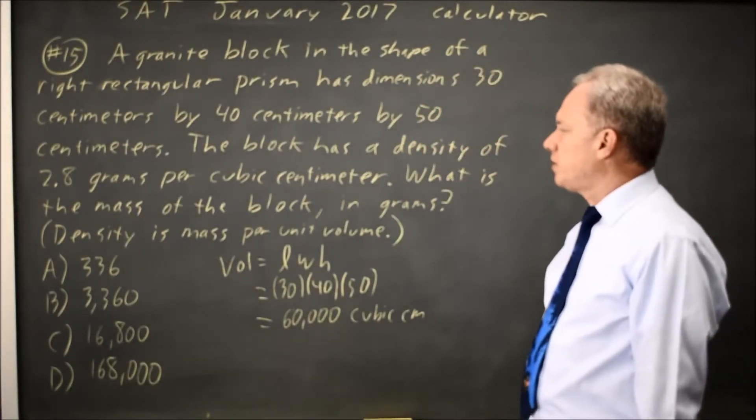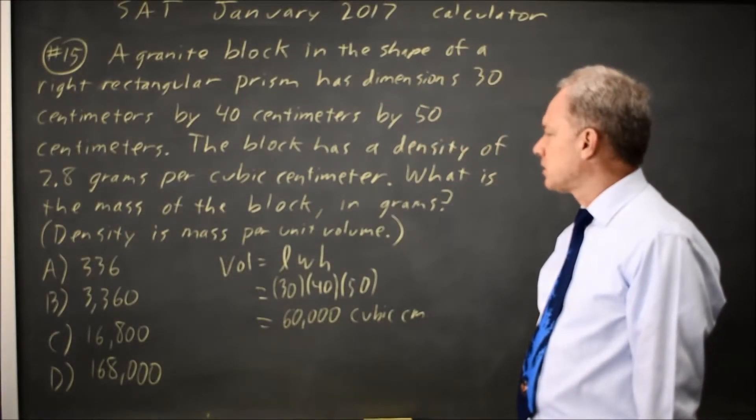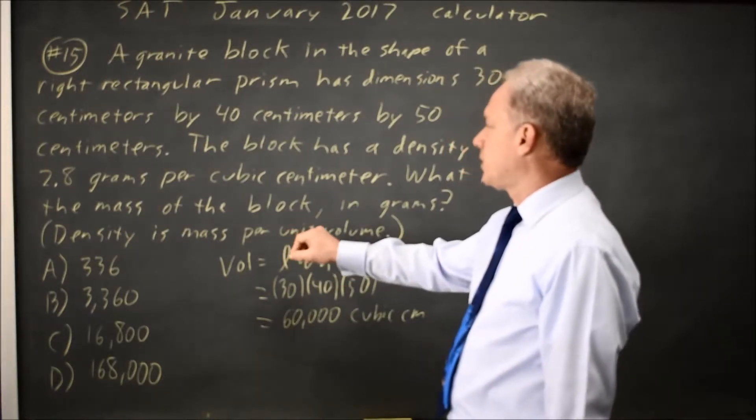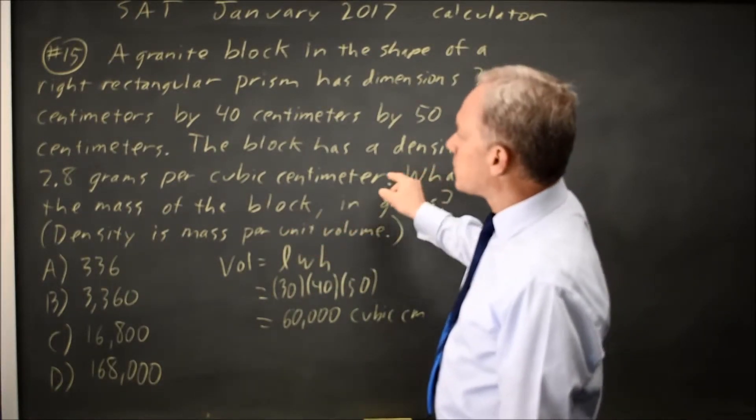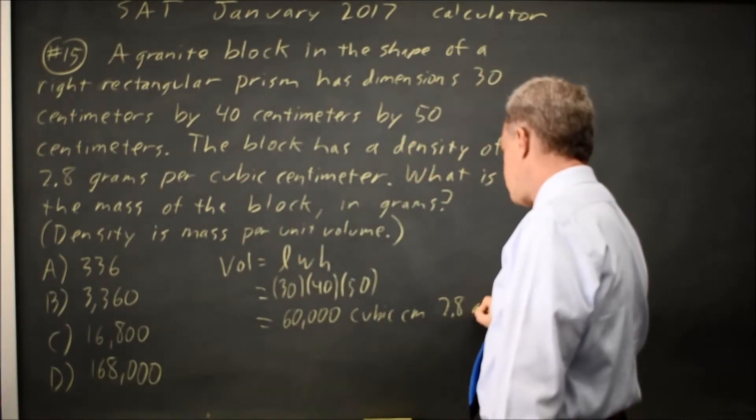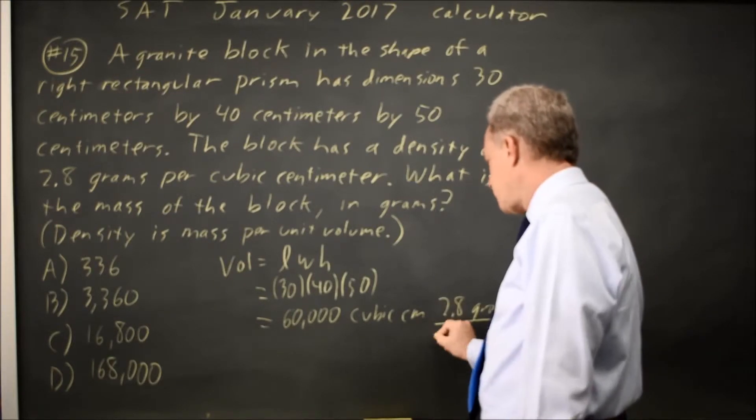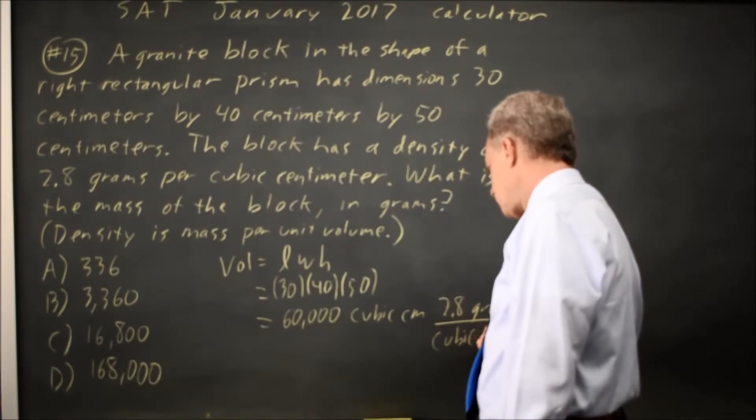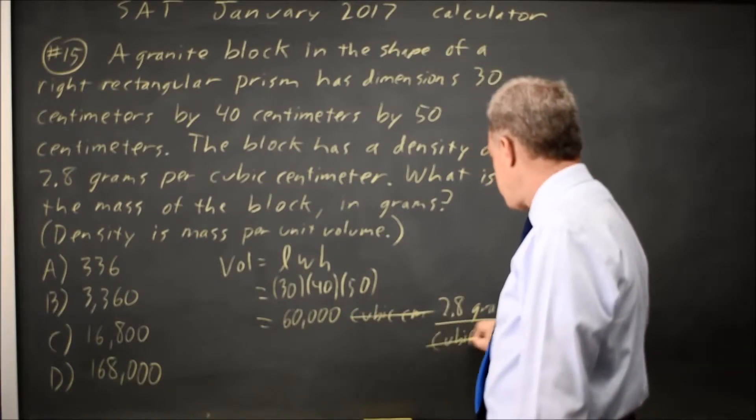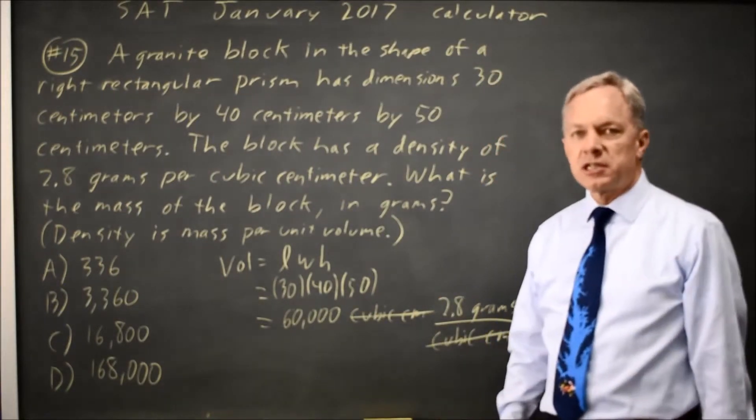To go from volume to mass, if I multiply cubic centimeters by, where is it, grams per cubic centimeter, 2.8 grams per cubic centimeter, the cubic centimeter in the numerator here will cancel cubic centimeters in the denominator.